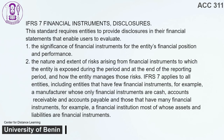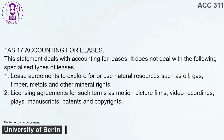IFRS 7 applies to all entities, including entities that have few financial instruments — for example, a manufacturer whose only financial instruments are cash, accounts receivable, and accounts payable — and those that have many financial instruments, for example, a financial institution most of whose assets and liabilities are financial instruments. IAS 17 — Accounting for Leases. This statement deals with accounting for leases. It does not deal with the following specialized types of leases.